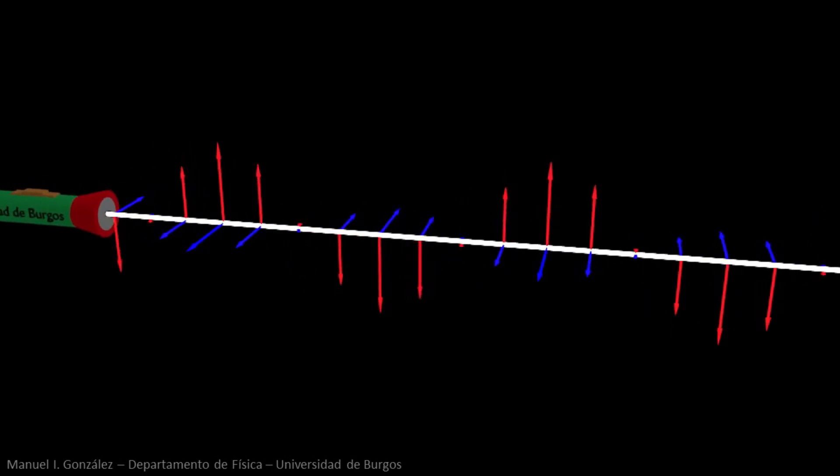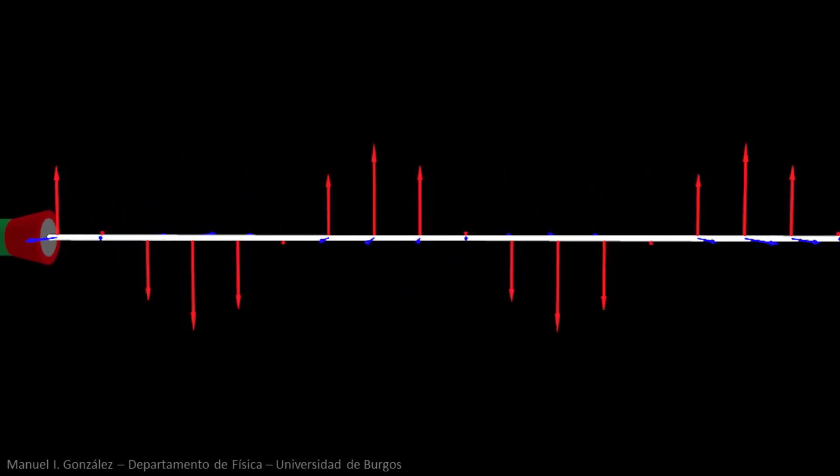Now let's freeze the image at any time. The distance between two consecutive maxima or two consecutive minima is the wavelength of our beam. It is often represented with the symbol lambda, the Greek equivalent of our L.